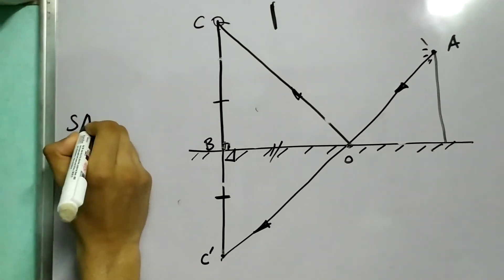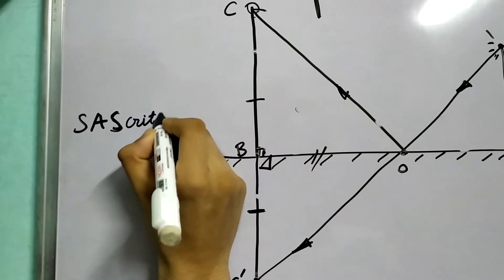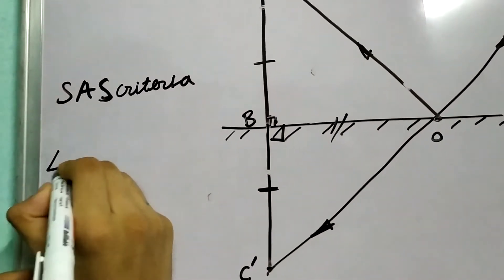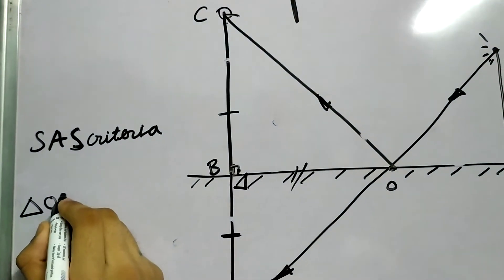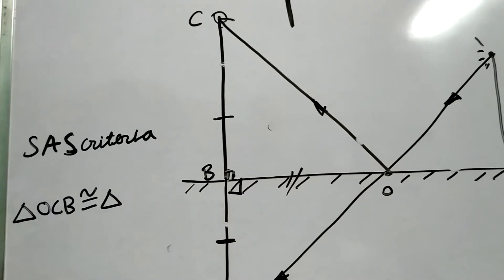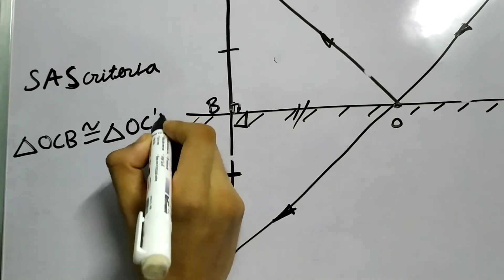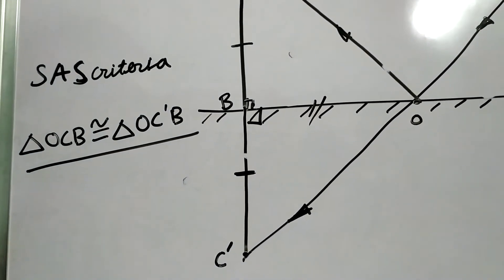So, because of SAS criteria, we can say that triangle OCB, OCB is congruent to triangle OC'B, OC dash B. Again, this is a really important part.